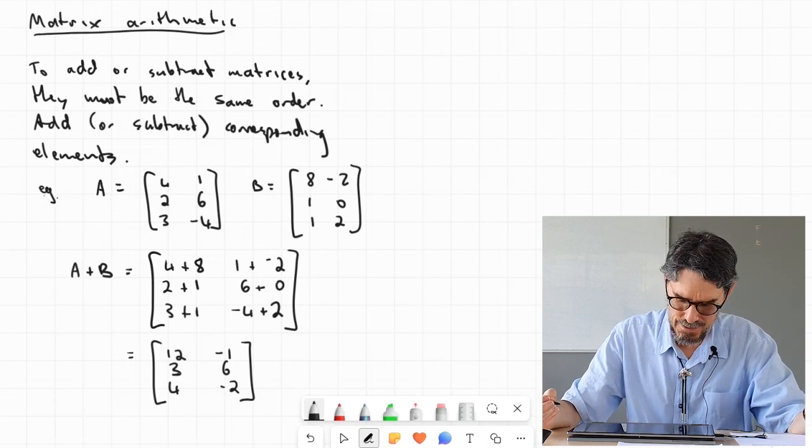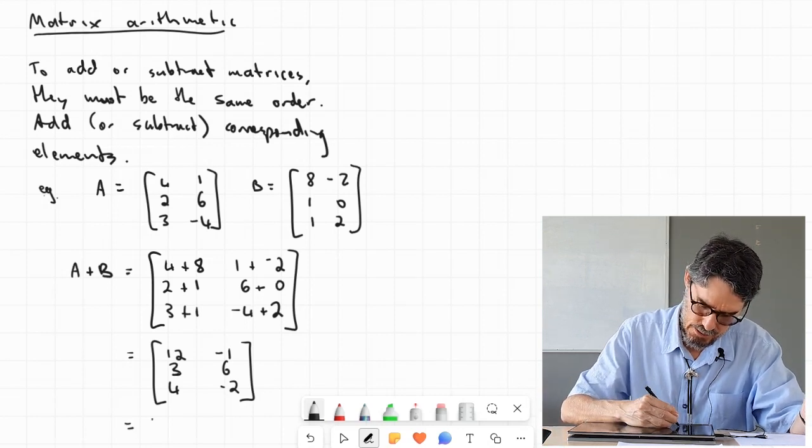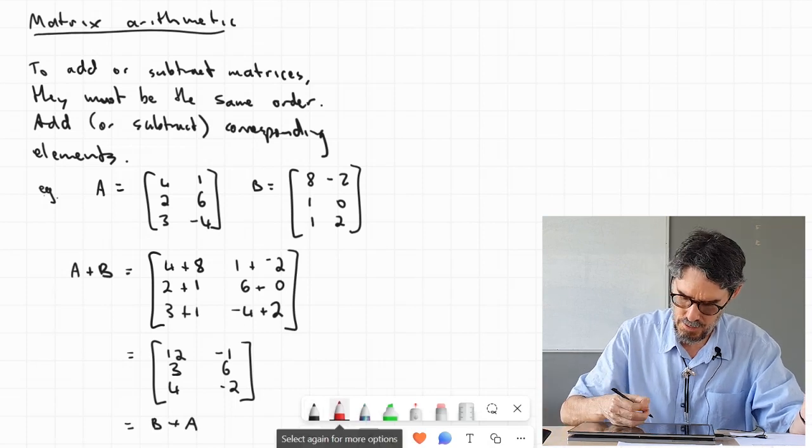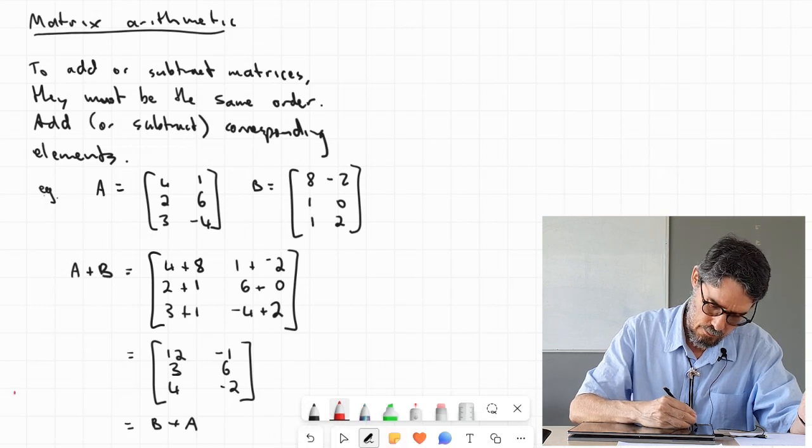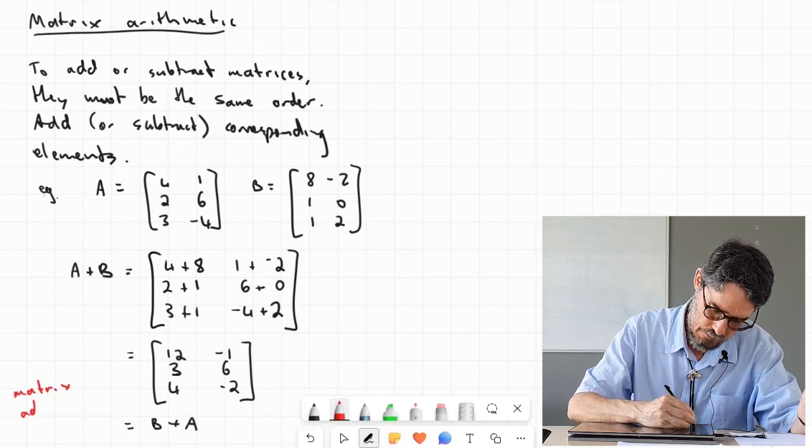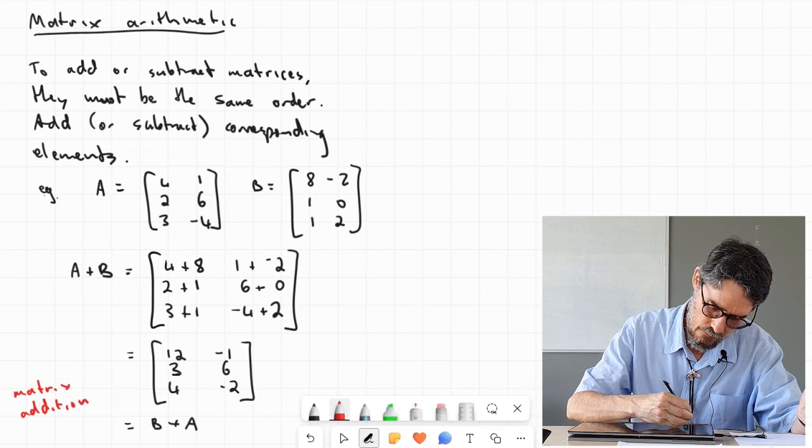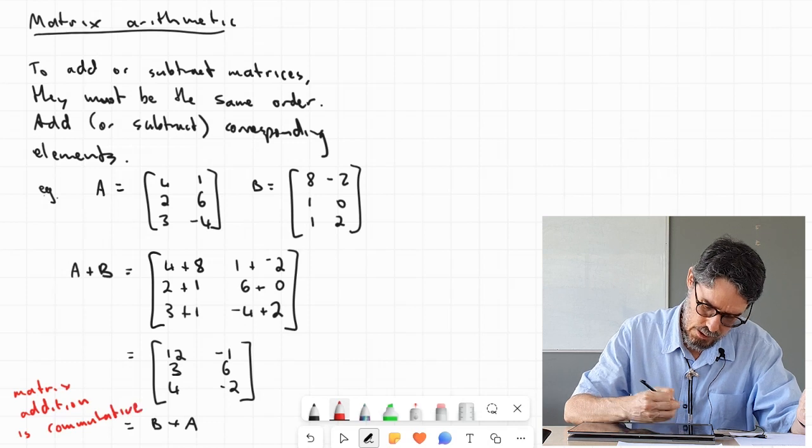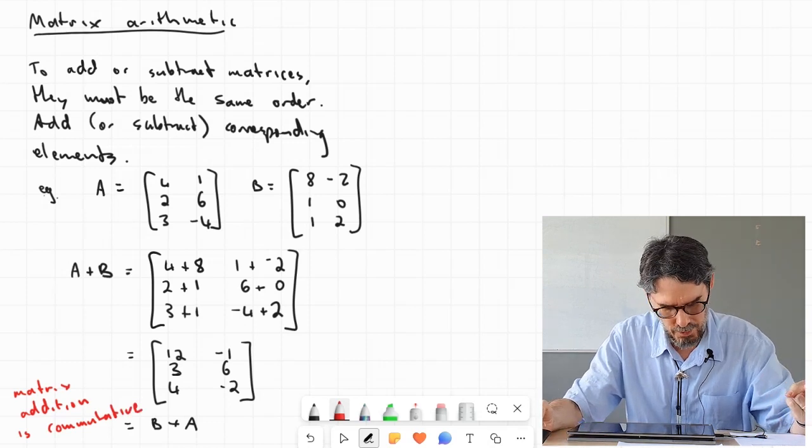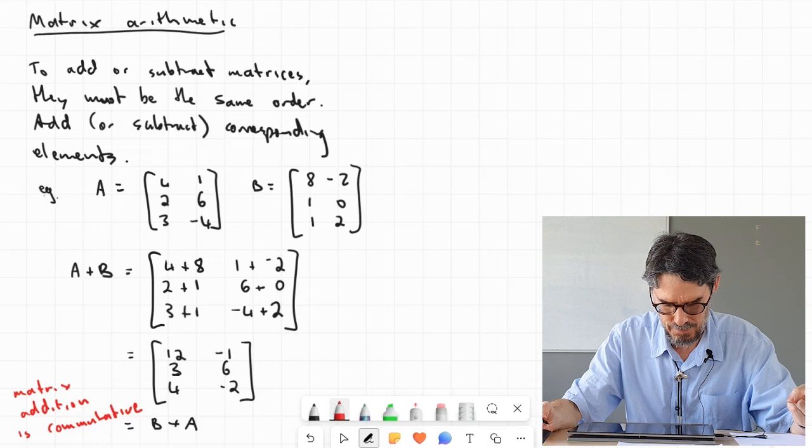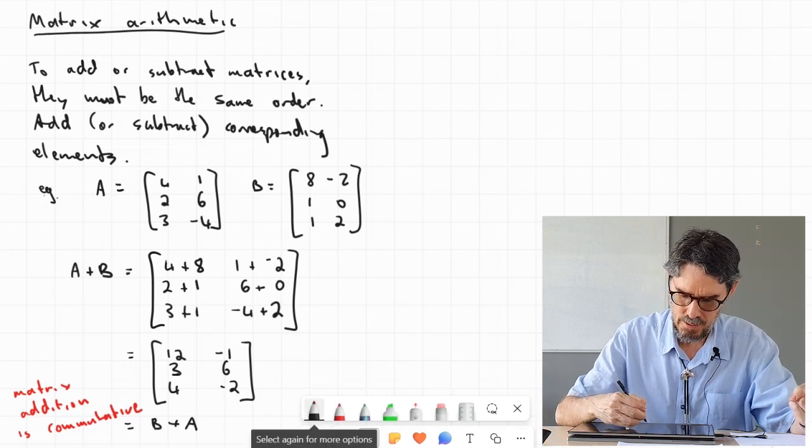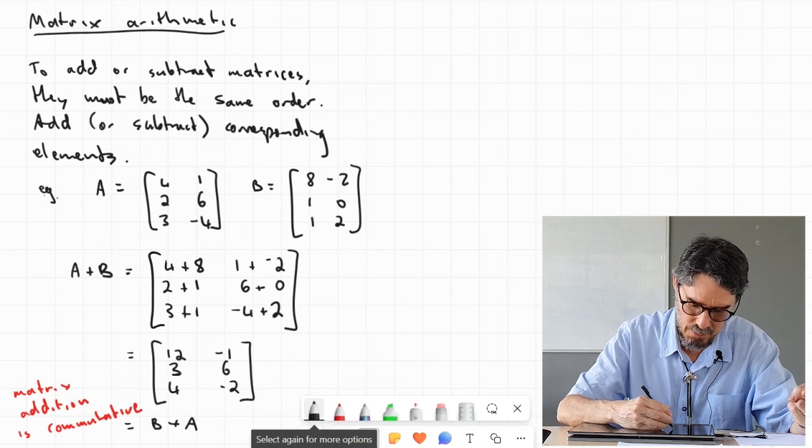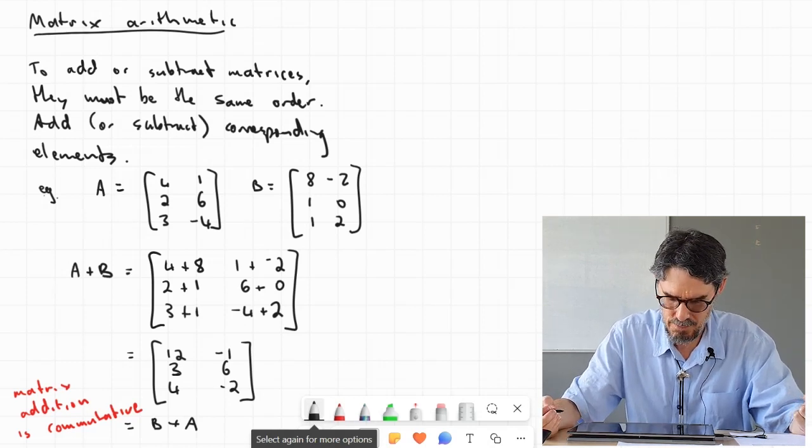Notice because of the way we did that, that's actually the same result as if we had gone B plus A. That is to say, matrix addition is—fancy word—commutative. You can swap the order and you still get the same result. That happens because all I'm doing is adding corresponding elements, and of course adding numbers is commutative. You can do it in whichever order.